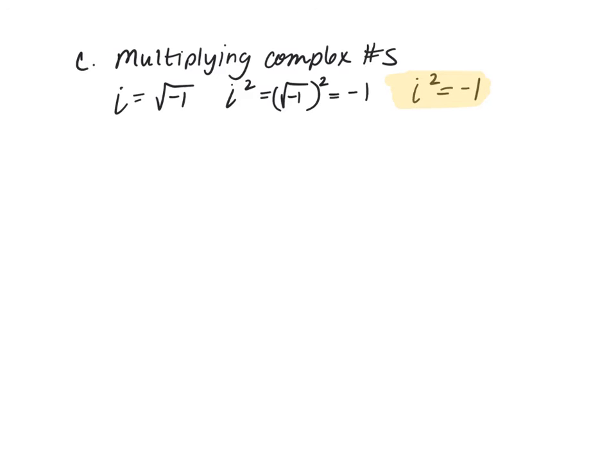So my first example is 15i times negative 1 plus 2i. And we multiply just like we would with variables, we distribute and combine like terms when we're done. So 15i times negative 1 is negative 15i. And 15i times 2i is positive 30i squared. And remember we said i squared equals negative 1, so this becomes 30 times negative 1.